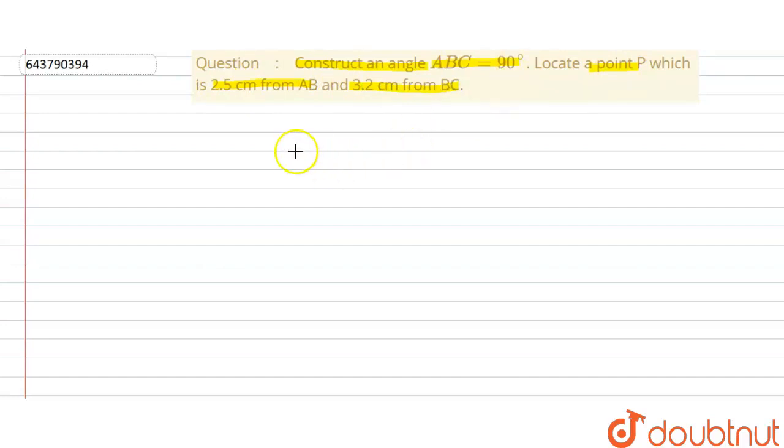So first we draw an angle which is 90 degrees. So this is our angle, let's say 90 degrees. Here this is 90 and this is angle ABC.